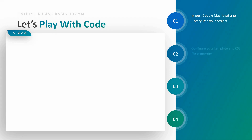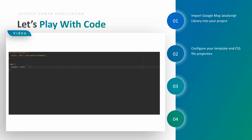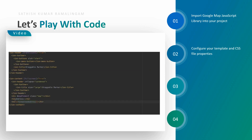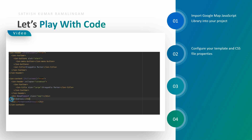Next, we are going to configure the HTML and CSS files. Open your component style file and create a new CSS class property for the map element. Then open your component template file and create a new HTML element for the map container. Don't forget to mention the template reference variable — it's very important. Below the map element, we are going to display the address details.